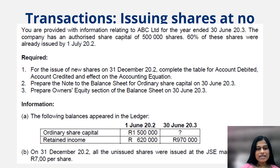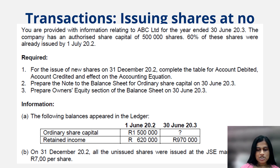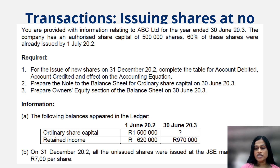The required asks us: for the issue of new shares on 31st December 2002, complete the table for account debited, account credited, and the effect on the accounting equation. Then prepare the note to the balance sheet for ordinary share capital at the end of the financial year, and prepare the owner's equity section of the balance sheet on 30th June 2003.